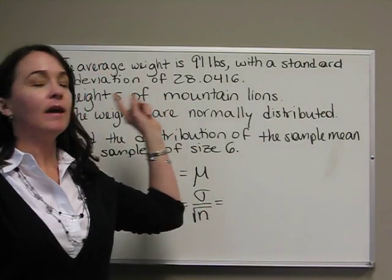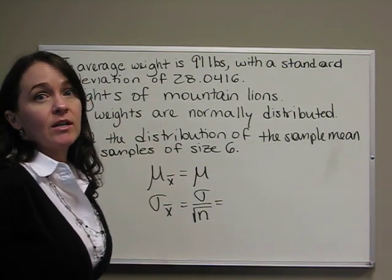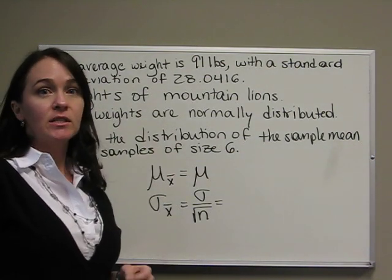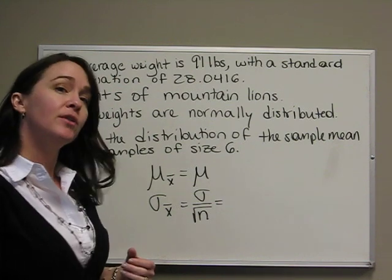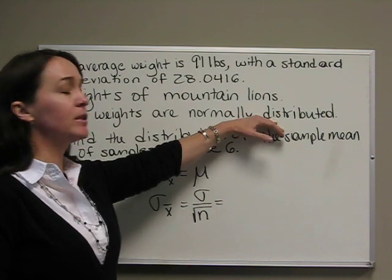All right, so for example, we have the average weight of mountain lions is 91 pounds with a standard deviation of 28.0416 pounds. We know that weights of mountain lions are normally distributed. That's going to be really important.